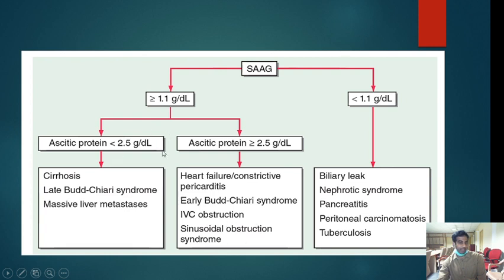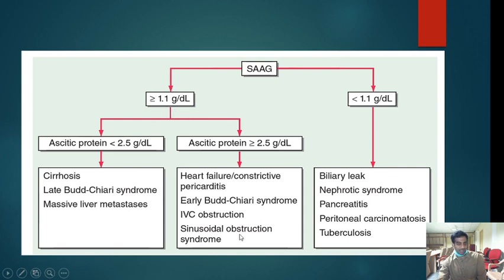This table is very important. In MCQs they may give you the serum albumin and ascitic albumin and ask the cause — for example cirrhosis, pancreatitis, tuberculosis, or liver metastasis. Just remember this SAAG classification table.